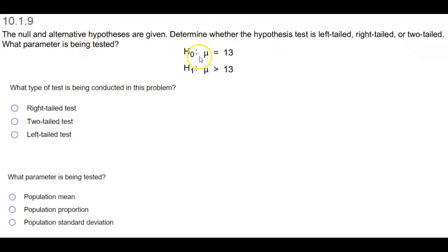Here is the null hypothesis, and you can see here that the symbol mu is equal to 13, and then the alternative hypothesis says mu is greater than 13. The first question says, what type of test is being conducted in this problem?